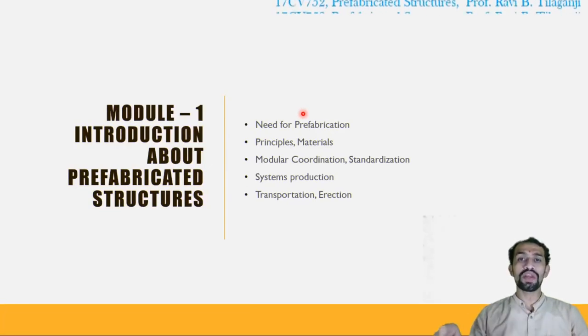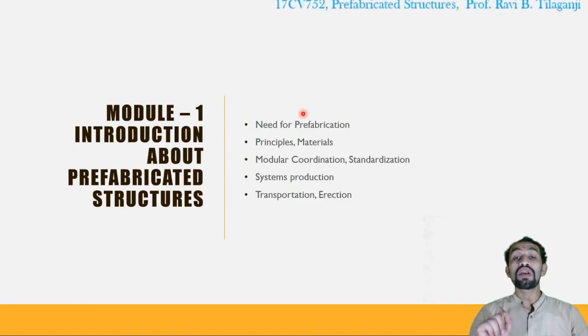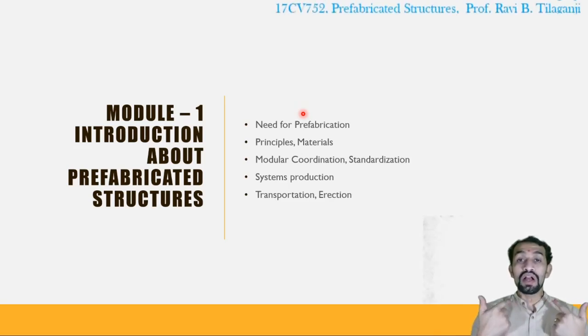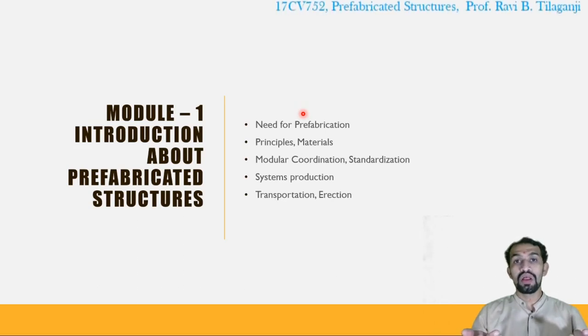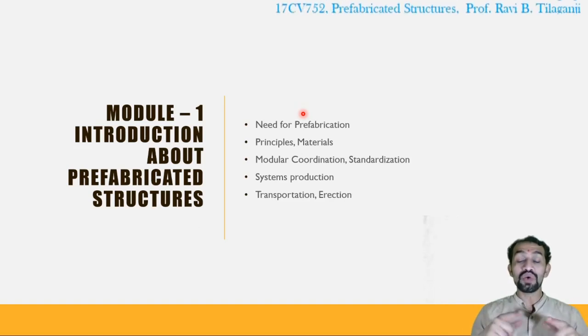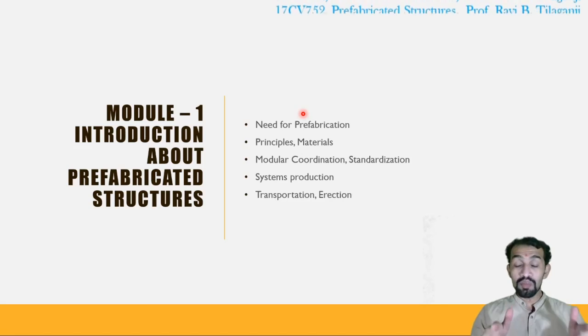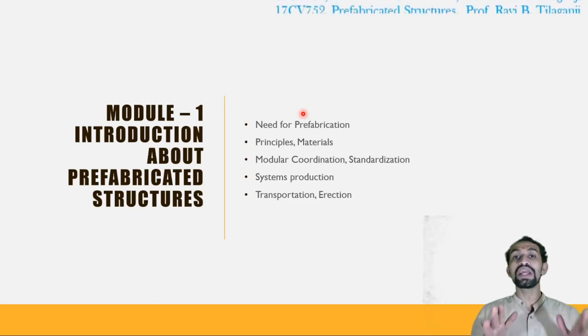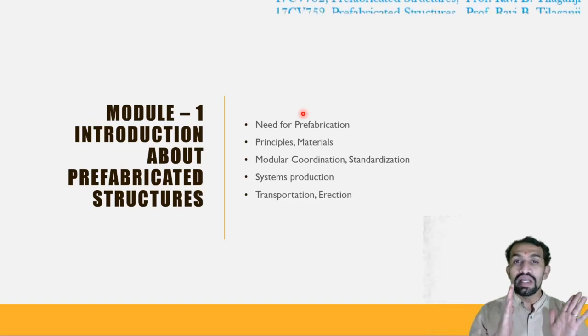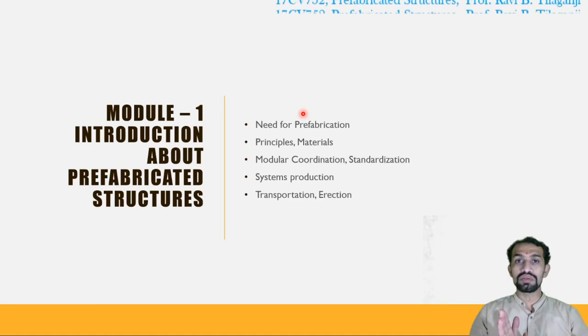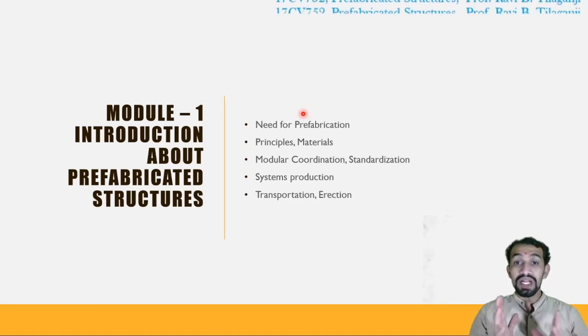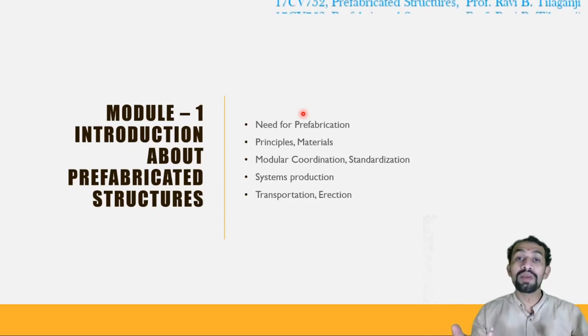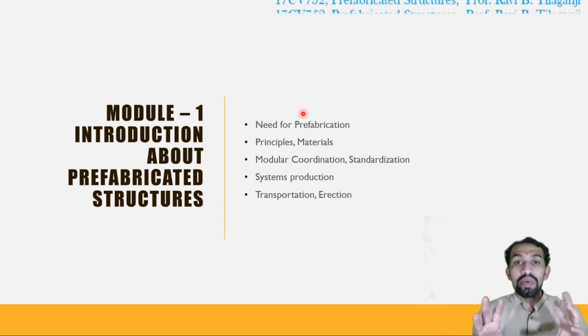Module 1 is introduction about prefabricated structures. Why is the need for prefabrication nowadays? Why it is more related? How it is different from the conventional method of construction? Reasons. Why we are going to opt for prefabrication? Is it more necessary in this era? Is it more necessary in the future days? Like that, what are the needs? Then comes principle, materials. What are the principles? How it will be taken into consideration? Material. Is there any different material for the prefabrication? Or it is as the same conventional material? We are making it into something new type, preparing it into a new part.